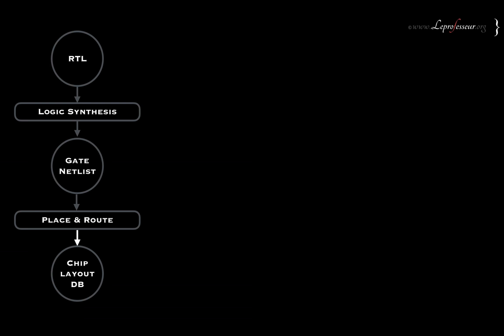We have discussed the basic chip design flow. RTL goes through a logic synthesis process, we get the gate netlist, then the gate netlist goes to the place and route tool, which does the final layout, and we get the chip layout database for tape out or pattern generation. In between, there are different steps like formal verification, timing closure, and physical verification, which we're not going to discuss here.